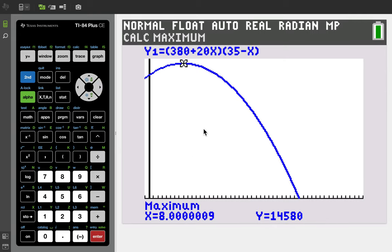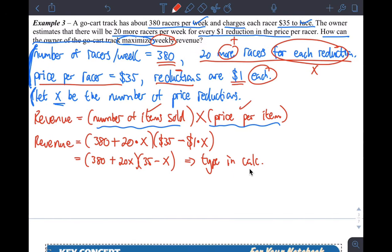So what you get is, if I have eight price reductions, remember of $1, X is price reductions, number of price reductions, then Y would be my revenue. So $14,580, my maximum revenue.